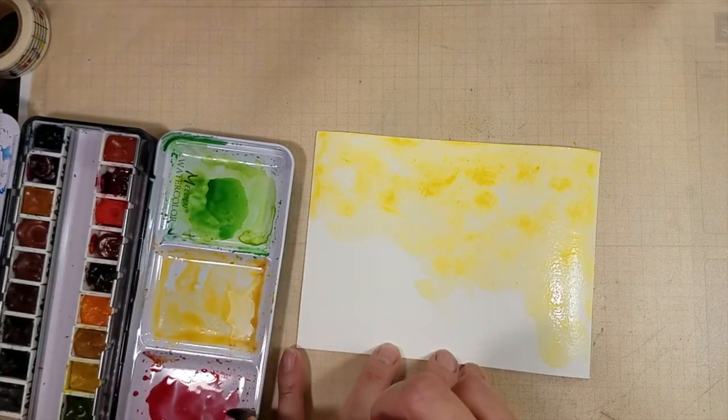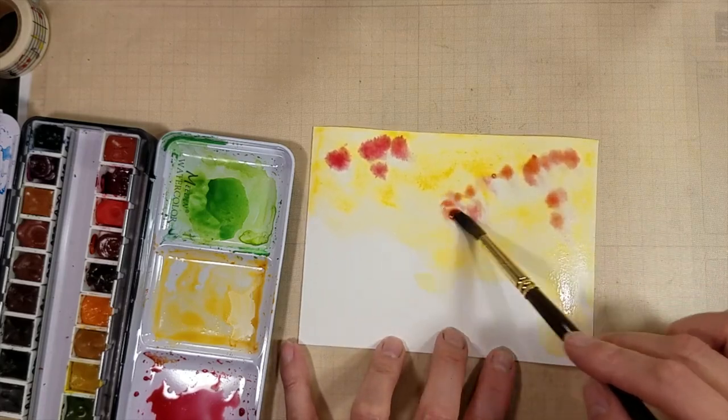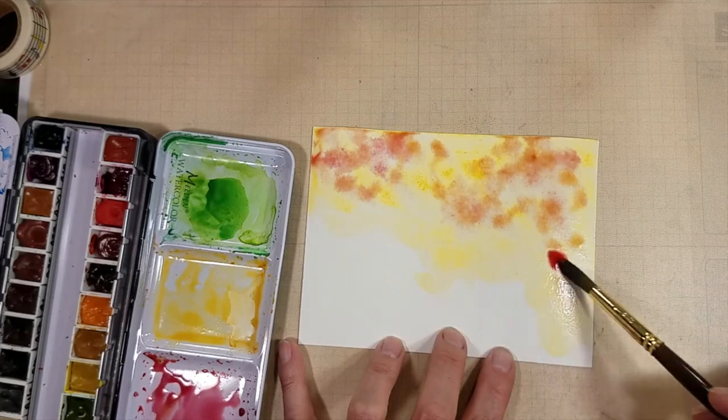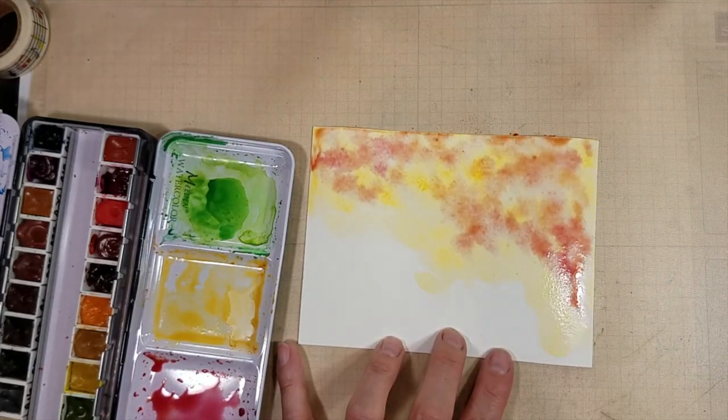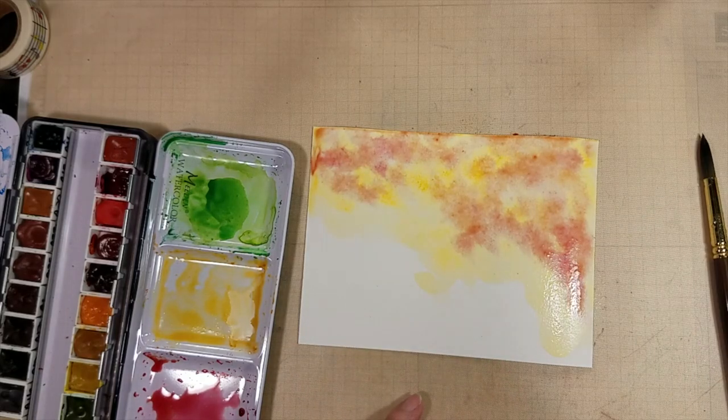And threw that on the wet area that I'd already done. I also rehydrate the red that's laying on my palette. I'm hoping to do or get a blend of yellows to reds. So yellow, orange,